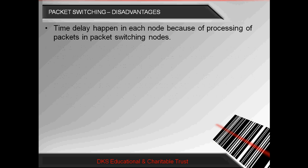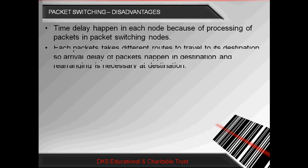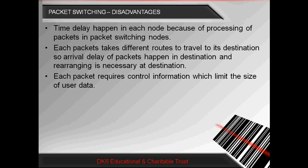There are also some disadvantages of Packet Switching. A time delay happens at each node because of processing — each packet switching node receives the packet, stores it, then finds the next leg to transfer the data, a process generally called store-and-forward. Each packet may take a different route to reach its destination, so arrival delay occurs and rearranging packets is necessary at the destination. Also, each packet requires control information, which limits the size of user data, whereas in Circuit Switching no control information is required as data is transmitted only on a dedicated path.